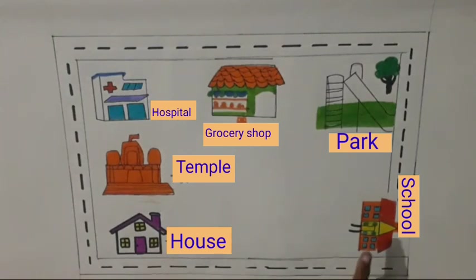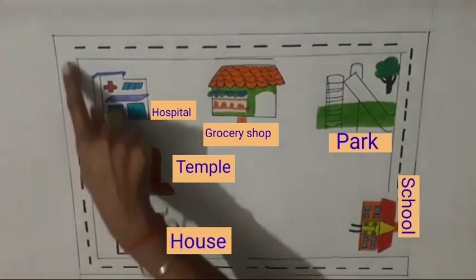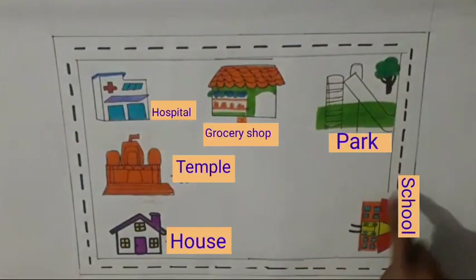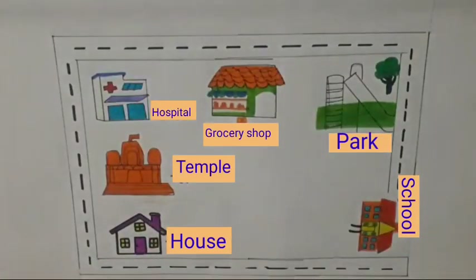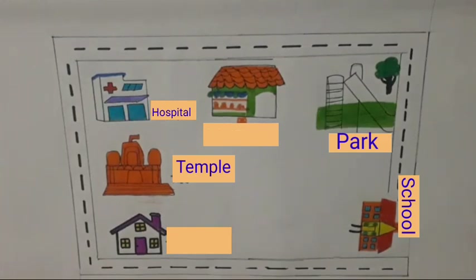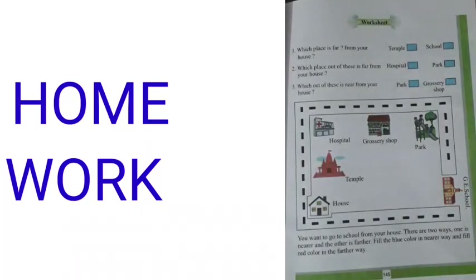You know children, there are two ways to school. One way is shorter and the other way is longer. You will have to fill the red color in the longer way and fill the blue color in the shorter way. Now children, from page number 145 of your book, you will have to solve this worksheet at your homes.